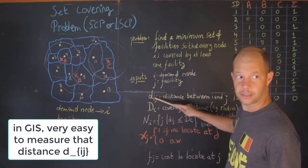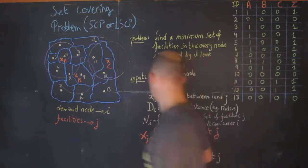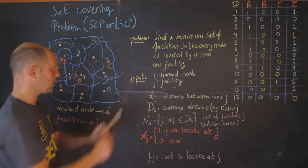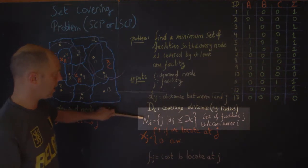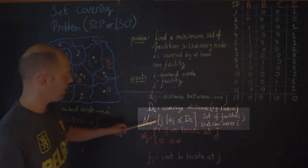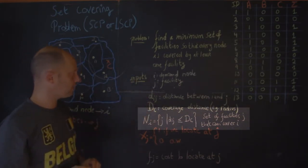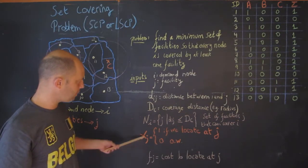Coverage distance is basically the radius. One set that we will extract from the distance is the facilities that are within that coverage threshold. Then the decision variables that we would use would be x_j.